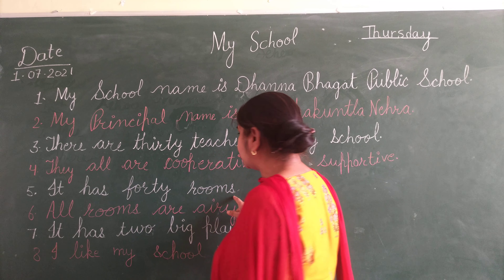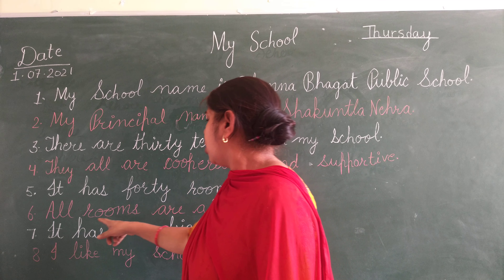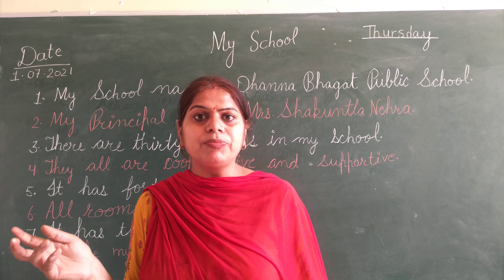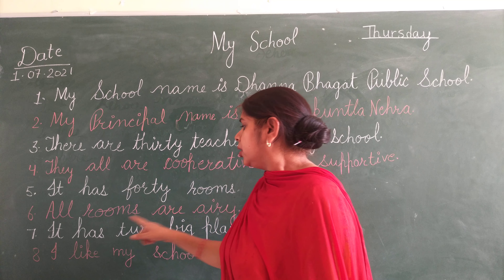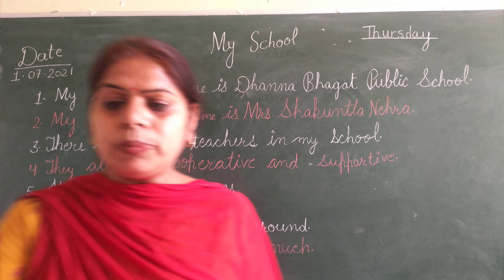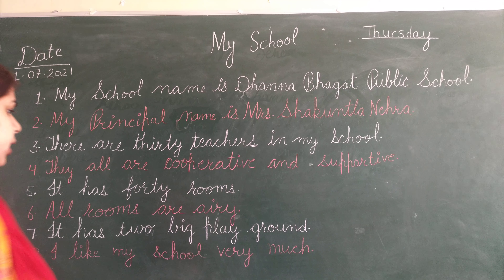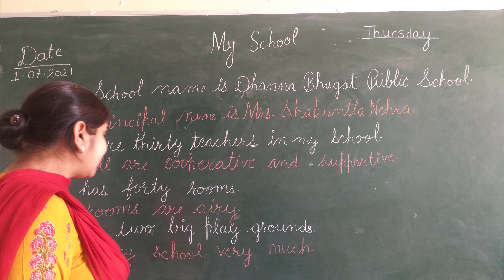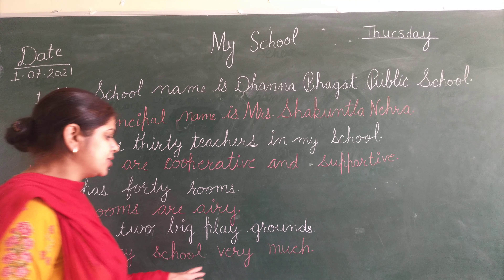It has 40 rooms. How many rooms does your school have? Near about 40 rooms, all rooms are airy. It has 2 big playgrounds. And the last line: I like my school very much.